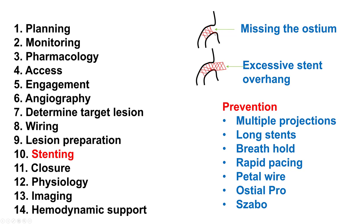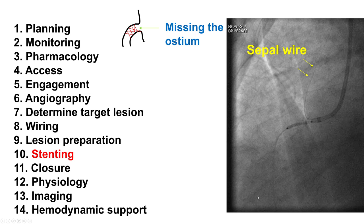For the first two problems — missing the ostium and excessive stent overhang — prevention is to ensure that the stent is placed optimally in the first place. This is done by using multiple projections, having a long stent so there is enough length to adjust and cover enough of the vessel. Sometimes, if there is too much cardiac movement, this can be done with breath hold or rapid pacing. Having a floating wire or sepal wire can help nail the ostium. There is also the OstialPro device and the Zabo technique. The floating or sepal wire marks the ostium and helps deliver the stent just protruding into the aorta from the ostium.